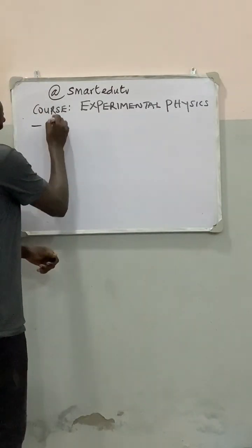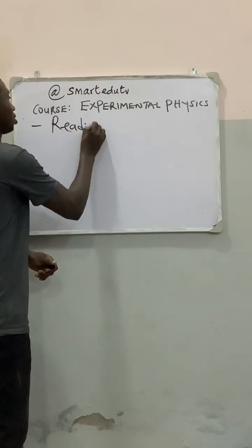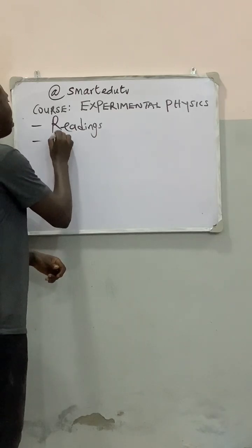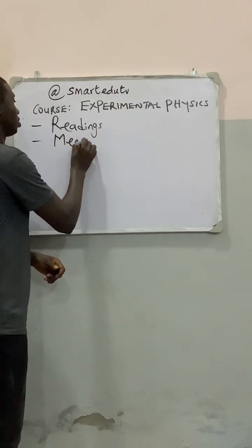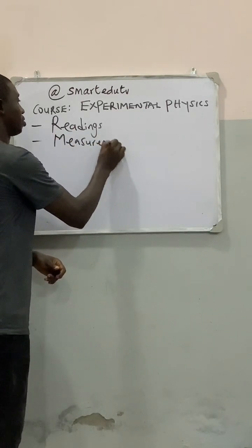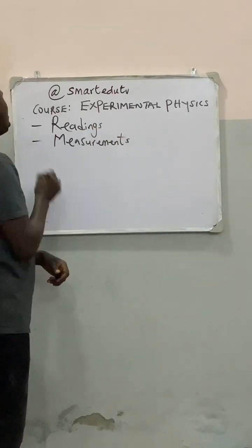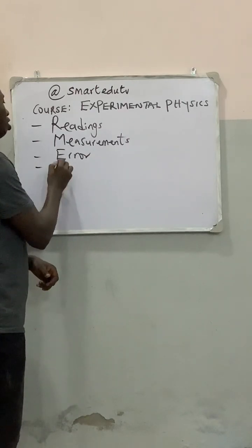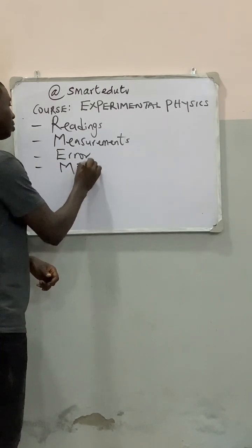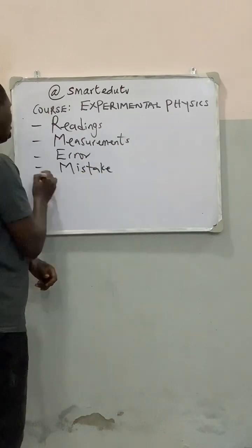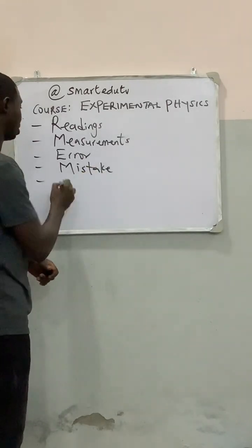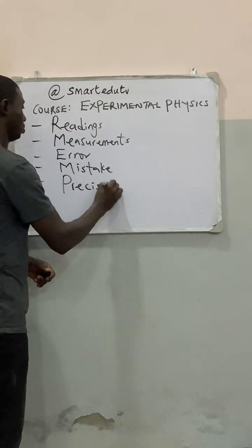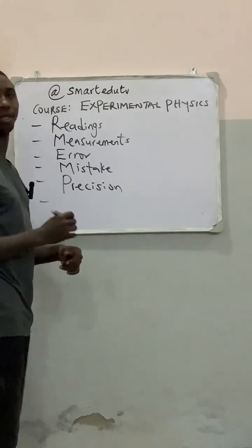Some of those terms include: number 1, readings; number 2, measurements; number 3, error; number 4, mistake; number 5, precision; and the last one, number 6, accuracy.